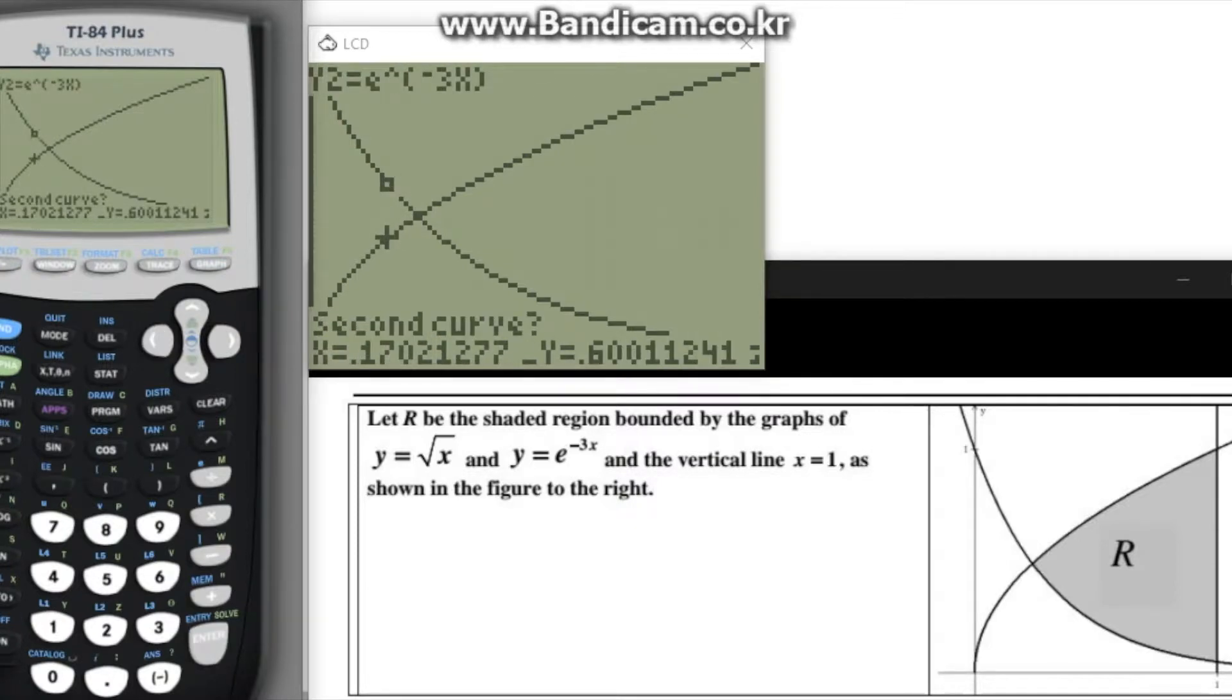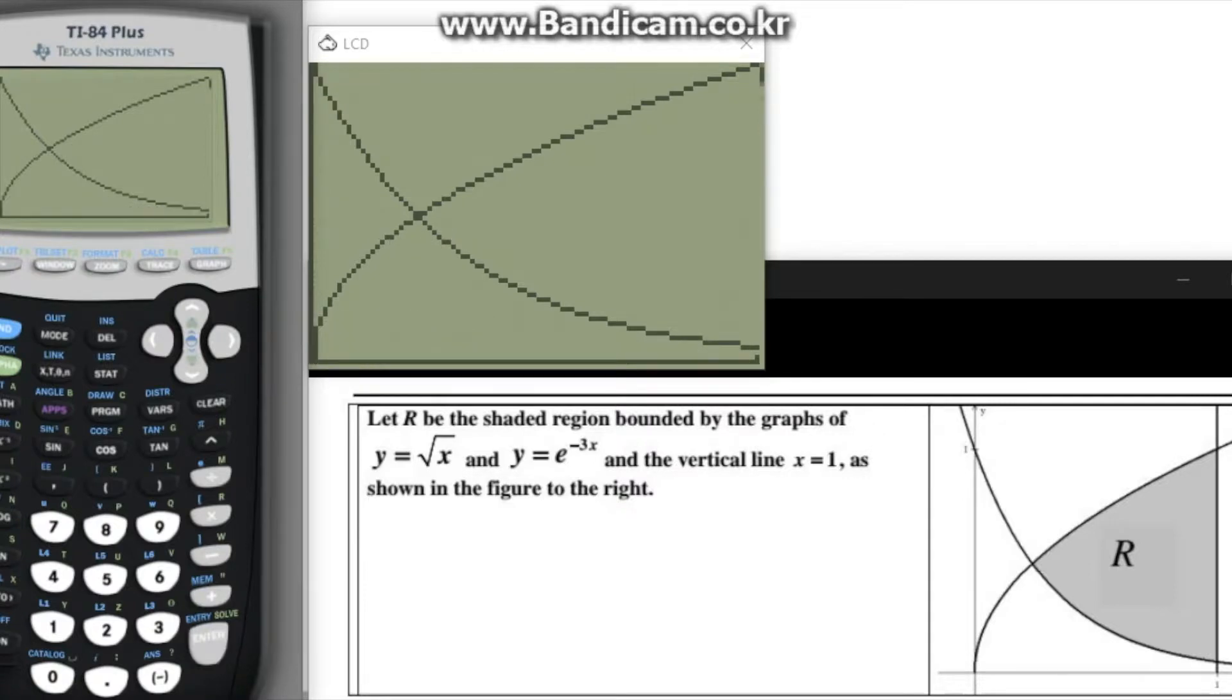At this point, the question second curve will show up on the screen so move the cursor over to a point on the curve of the other equation near the intersection and press enter again. The calculator will say guess and just press enter until the display shows the word intersection. For this example, the intersection point is at x equals 0.23873 and y is equal to 0.48860.